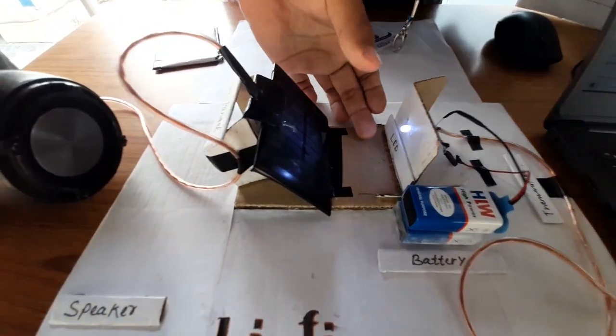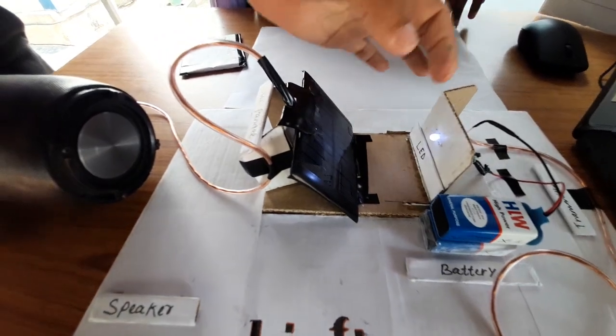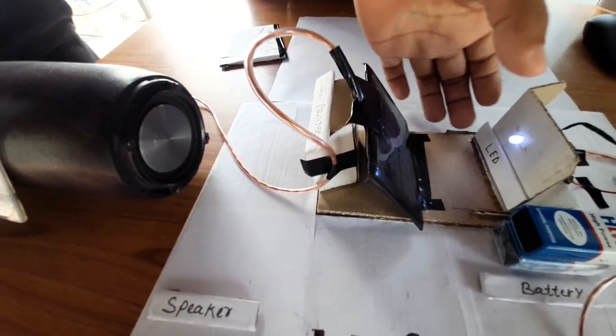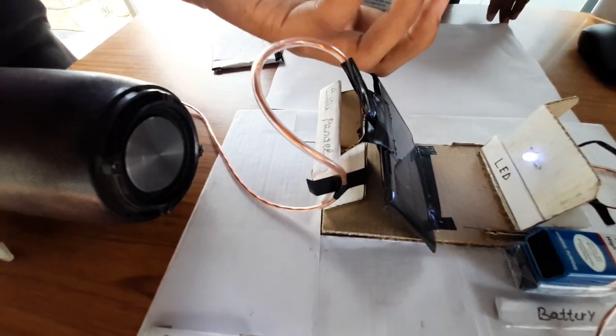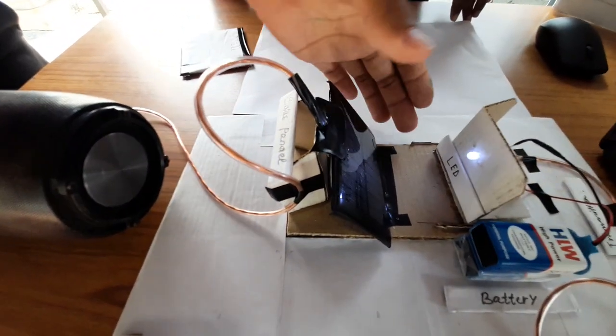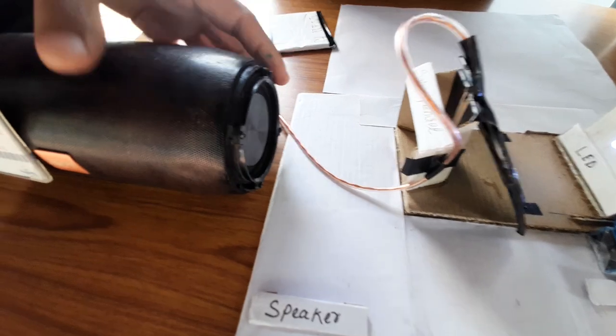It is sending the audio signal along with the light. And this photo detector is harnessing the light along with the audio signal and amplifying back into the speaker. So it is playing a song now.